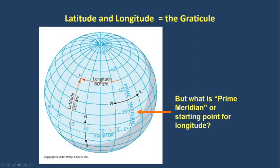There's an obvious starting point to define latitude in degrees of arc north or south of the equator. But what about the starting point for longitude? Is there an obvious prime meridian or starting point to use? Here we've got a longitude defined as 60 degrees of arc to the west of a meridian, but how do we define where that meridian starts?